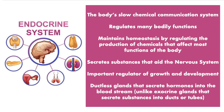It secretes substances that aid the nervous system. It's an important regulator of growth and development, especially as we're talking about puberty and changes of the body. It is a ductless gland system, meaning that it does not have ducts or tubes that secrete hormones. So the endocrine system secretes the hormone directly into the bloodstream. This is different from the exocrine system, which needs a duct or tube to secrete its substance. So the endocrine system is ductless, or without tubes.